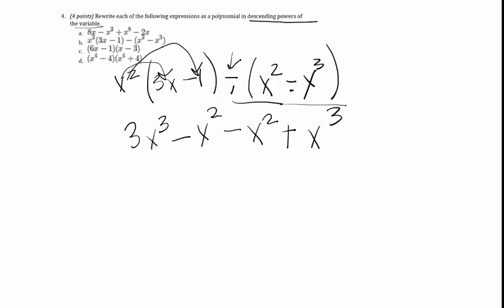I can simplify this a little further by combining like terms, saying 3x cubed plus x cubed is 4x cubed. And then negative x squared minus x squared is negative 2x squared.